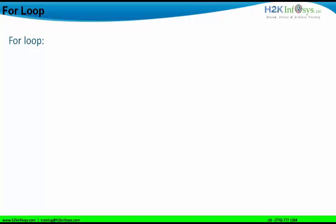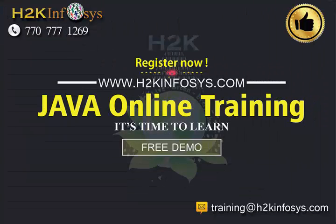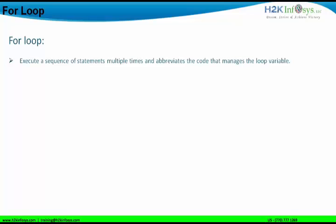In the for loop, the aspect of infinite looping is not there, because generally in the for loop we describe the condition in such a manner that we avoid the infinite loop structure. When we want to execute a sequence of statements or a sequence of code multiple times and abbreviate the code that manages the loop variable, we use the for loop.